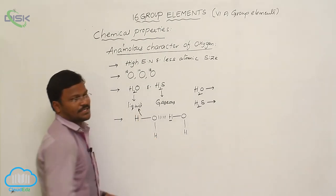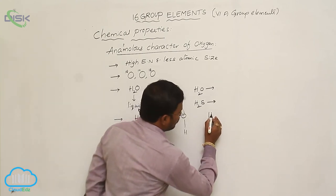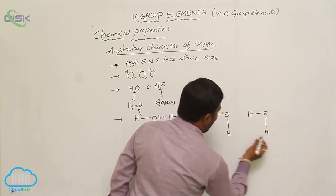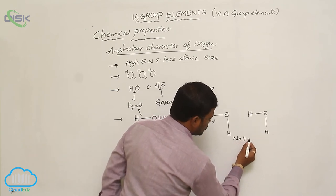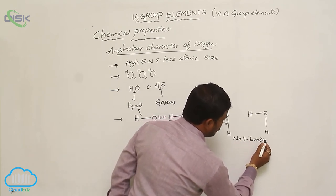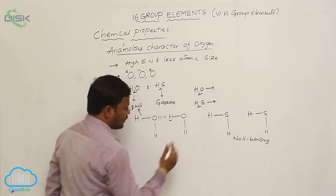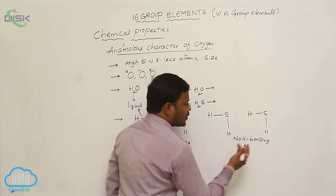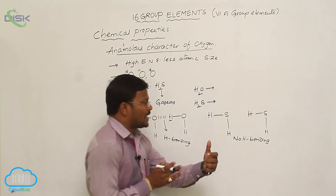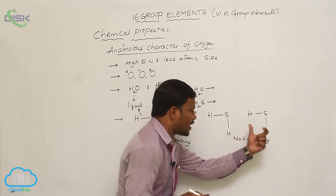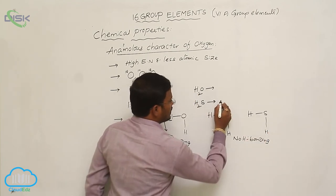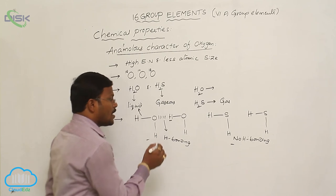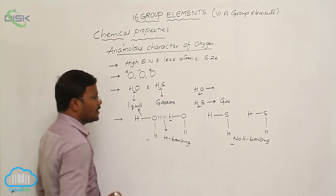In contrast, in hydrogen sulphide (H₂S), there is no hydrogen bonding between two different H₂S molecules. Because of the absence of hydrogen bonding, there is no significant intermolecular attraction between H₂S molecules, and so it exists in the gaseous state. In water, it is the presence of hydrogen bonding that results in the liquid state. This is an example of the anomalous character of oxygen.